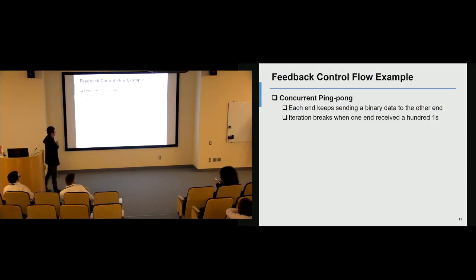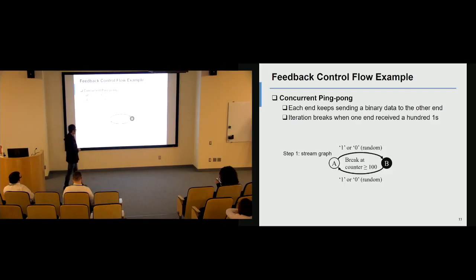Suppose I want to write a very simple application called concurrent ping pong. This is a very representative workload in many parallel computing scenarios because it represents back and forth message passing, and it's the fundamental building block of many feedback control systems. In this program, we have two ends. One end keeps sending randomly generated binary data to the other end, and the iteration will stop whenever one receives 100 ones. This is the stream graph: we have two vertices. Each vertex keeps sending a random binary number to the other end, and iteration stops whenever it receives 100 ones.